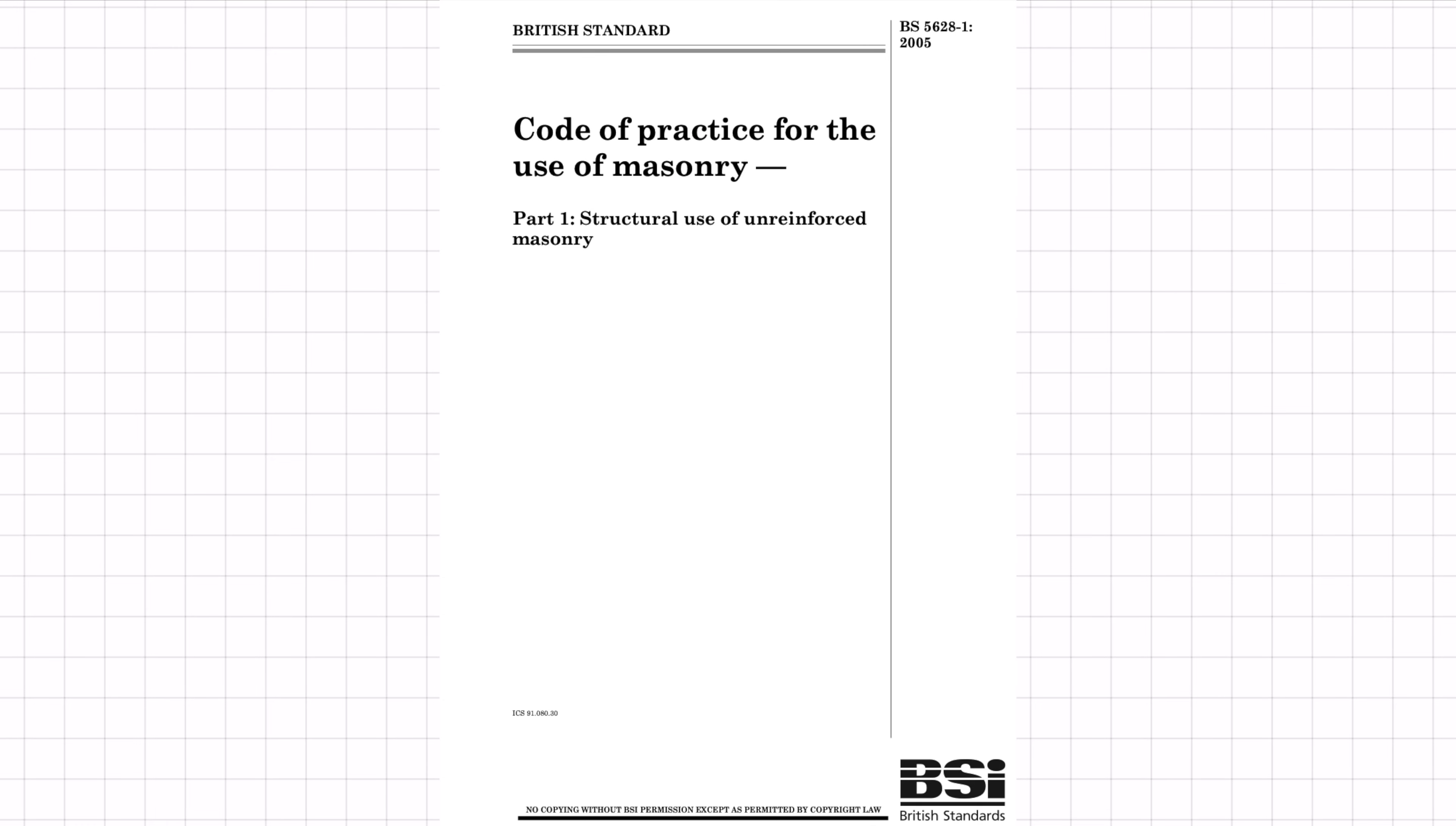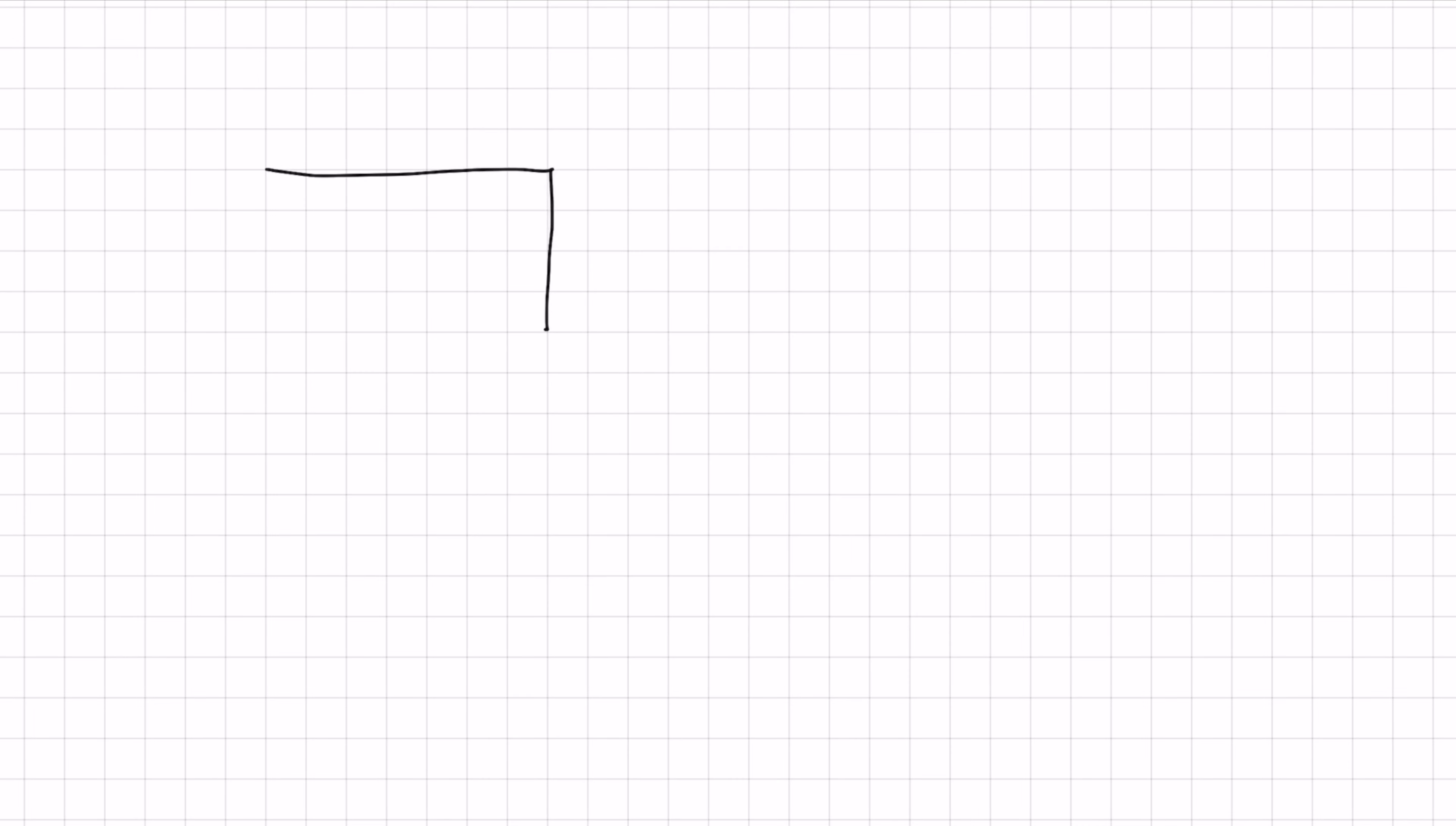I want to go through this example using the British Standards version, and the steps are pretty much exactly the same for Eurocodes. The main difference is the way in which you calculate the resistance for the stresses. In the British Standards it's way simpler than the Eurocode. It's really long-winded in the Eurocode, but as long as you follow the code it's not too bad.